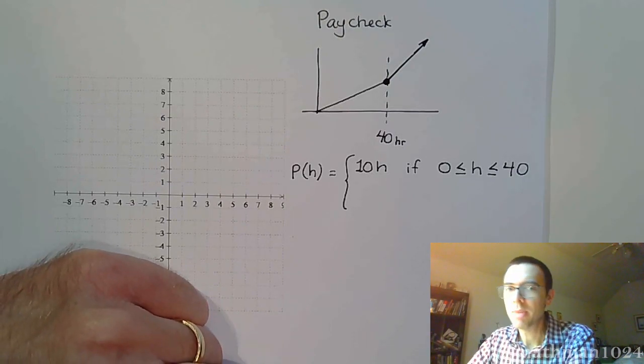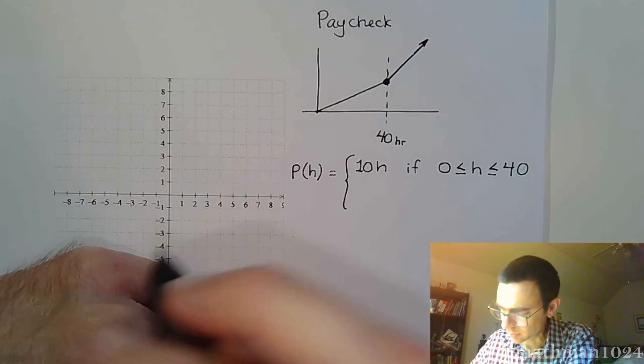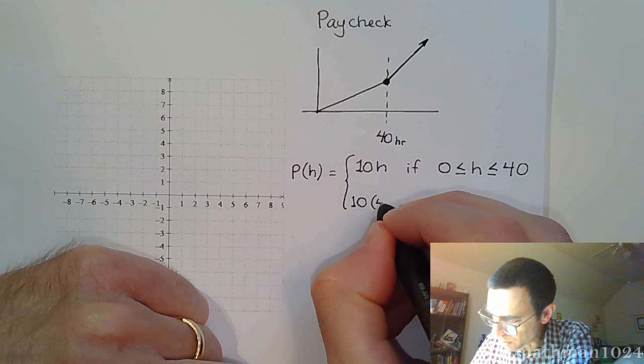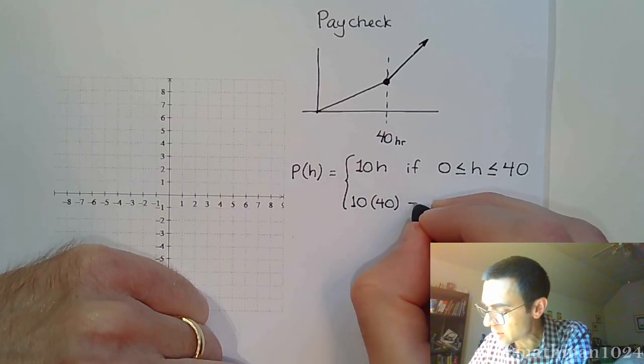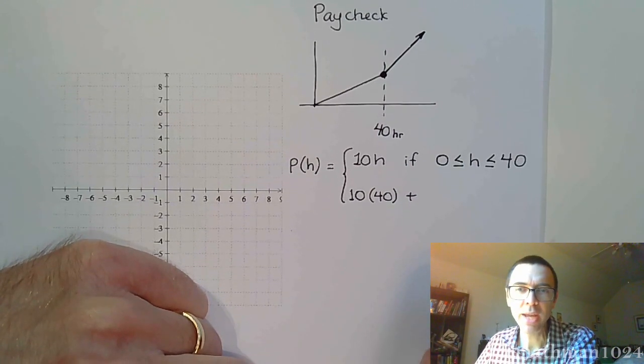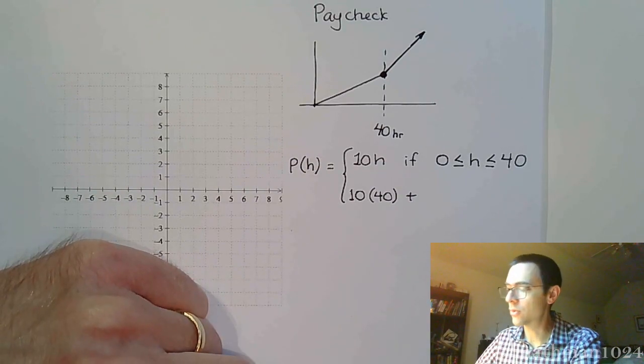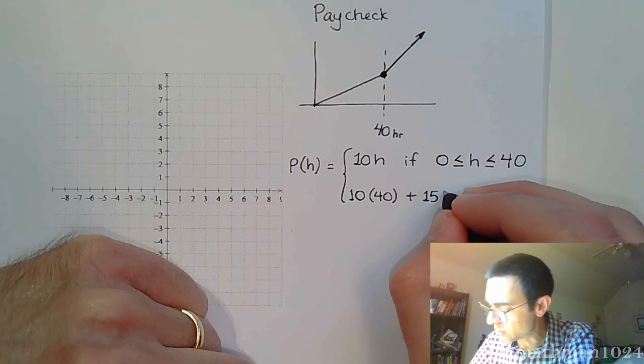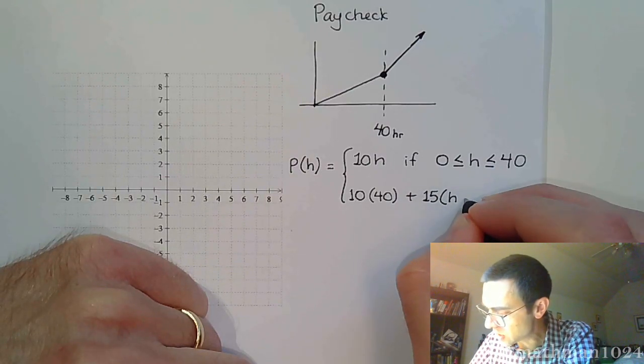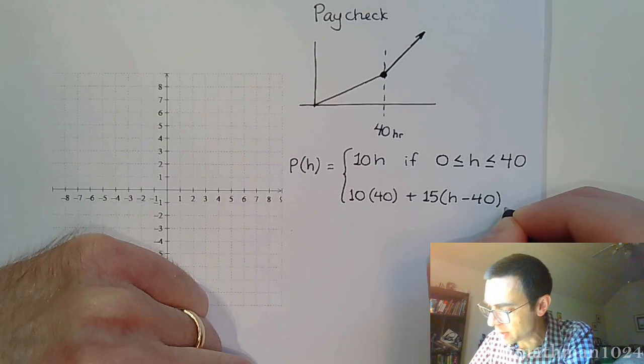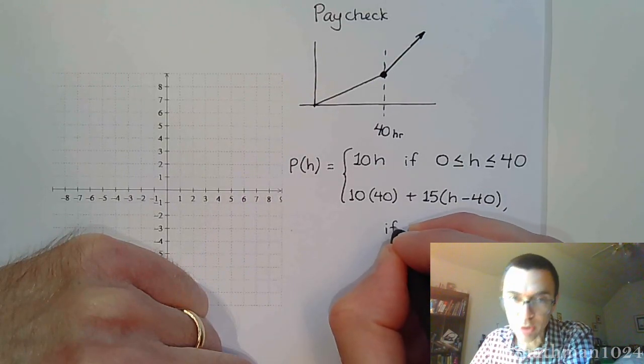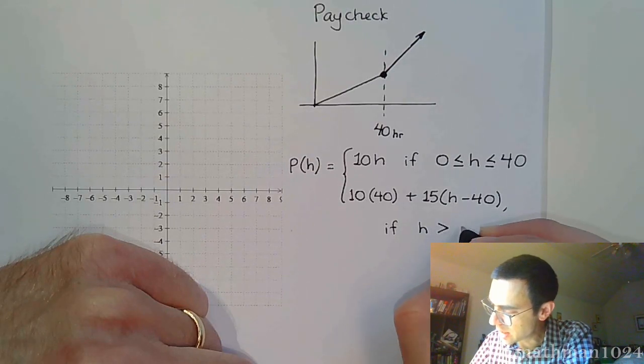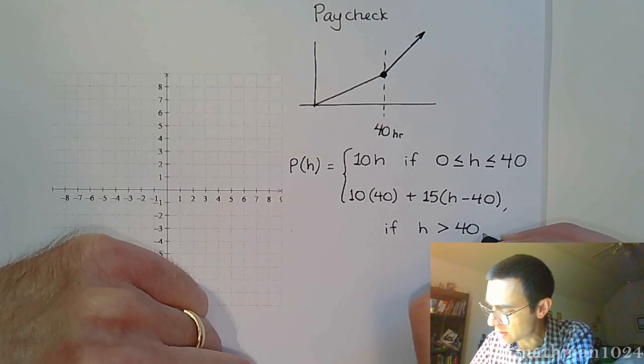If you end up working more than 40 hours, the pay is a little bit different. You get paid $10 for those first 40 hours. Plus, now you're going to get paid $15 for every hour over that. So that's going to be $15 for every hour beyond that, which is going to look like this: h minus 40. And this is going to be when h is greater than 40.